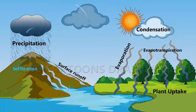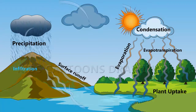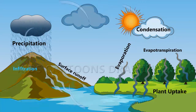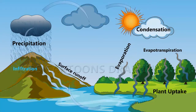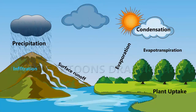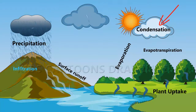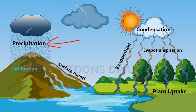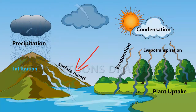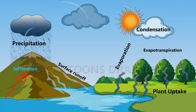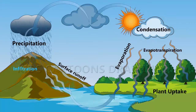Many processes are involved in the water cycle. The most important are evaporation, transpiration, condensation, precipitation and surface runoff, infiltration, and subsurface flow.